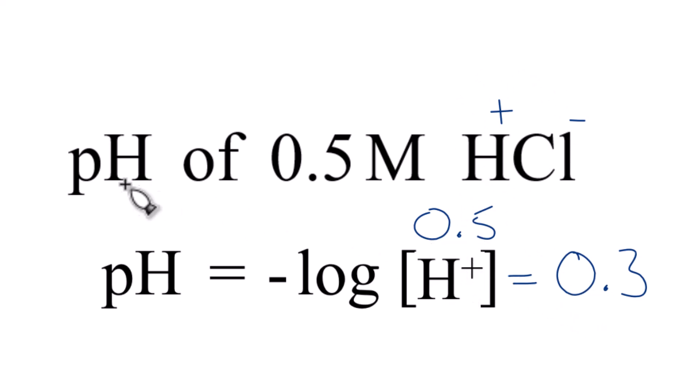That's it. This is Dr. B looking at the pH of 0.5 molar hydrochloric acid. The answer, 0.3. Thanks for watching.